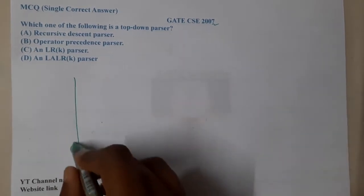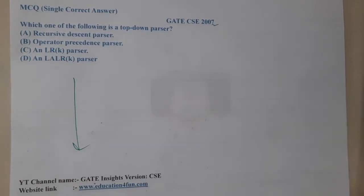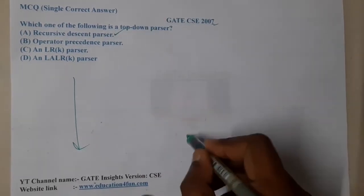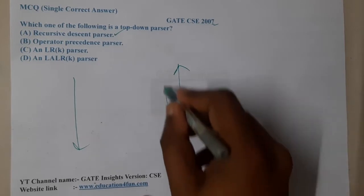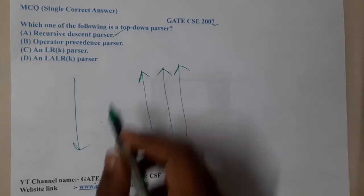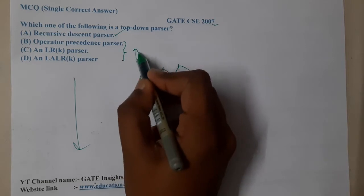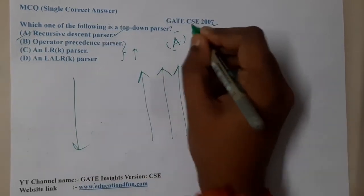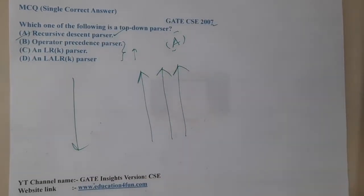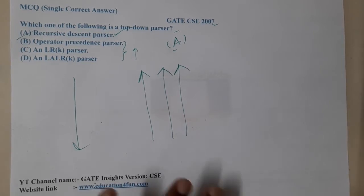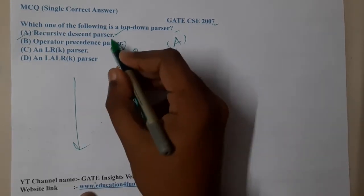Recursive descent parser is the answer. When it comes to operator precedence, it is a bottom-up parser. Similarly, LR(k) and LALR — all these are bottom-up parsers. So option A will be the correct answer. This is quite an interesting and easy question.